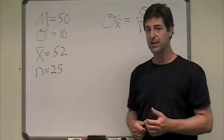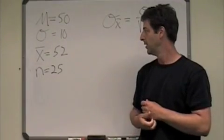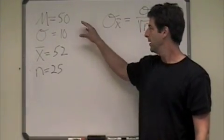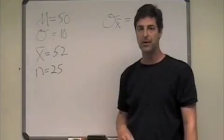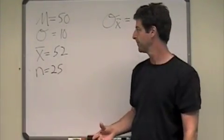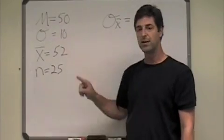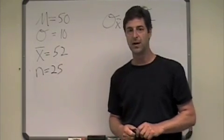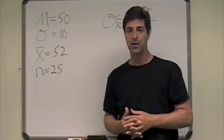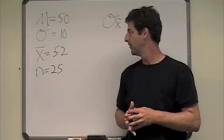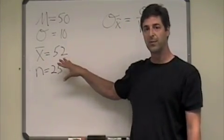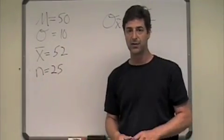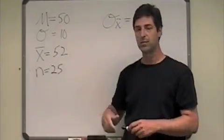In this case, we know the population standard deviation, so we're going to use it. The question is: in the population, people eat pizza 50 times a year on average, and the standard deviation is 10. We have a random sample of 25 people who eat pizza on average 52 times a year. What's the probability of getting a random sample of 25 people that eat pizza at least 52 times a year if the population mean is 50?